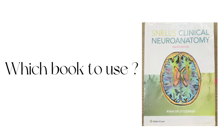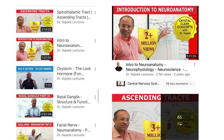Most of you will ask first which book to use for studying neuroanatomy, and my answer is Snell's Neuroanatomy — it is the best book. Most teachers also recommend it. It has easy wording, covers all topics and important things, and it also has MCQs so you can practice and clear your concepts.